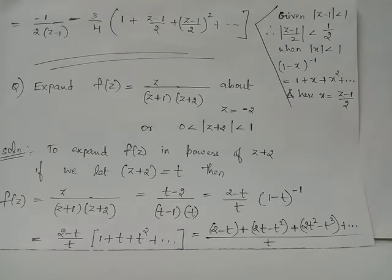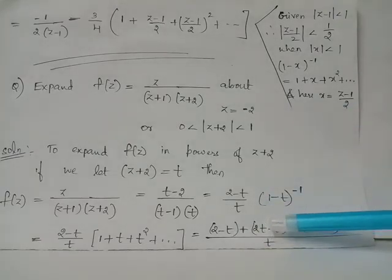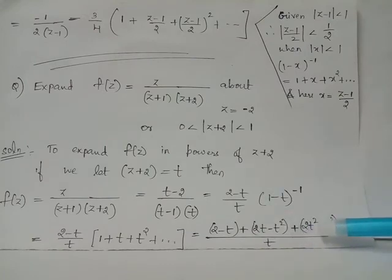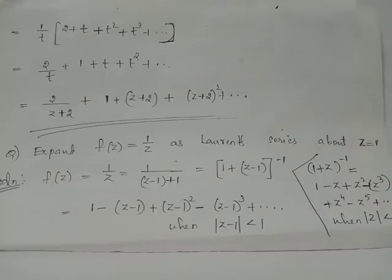Multiplying (2 minus t) inside the bracket gives 2 minus t plus 2t minus t squared plus 2t squared minus t cubed plus etc, all over t. After simplification: negative t plus 2t gives positive t, negative t squared plus 2t squared gives positive t squared, and so on. Thus f of t equals (1 over t) times (2 plus t plus t squared plus t cubed plus etc).